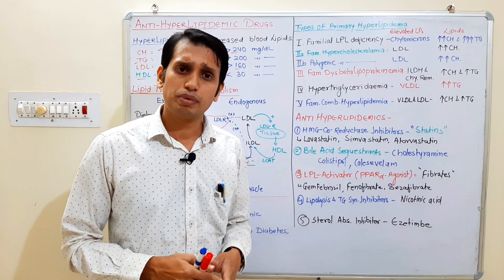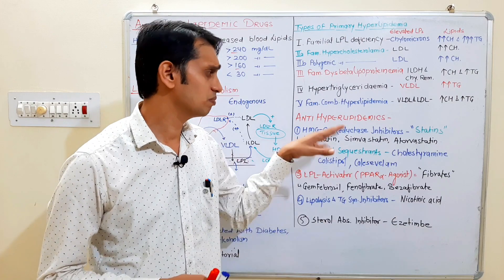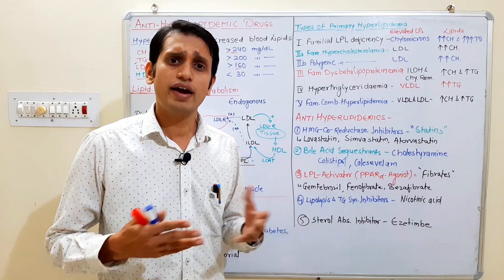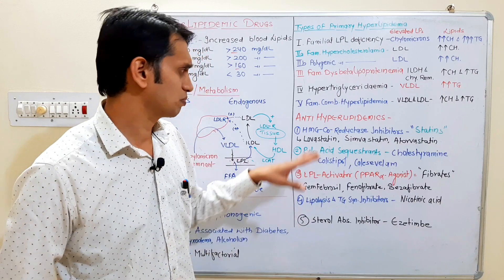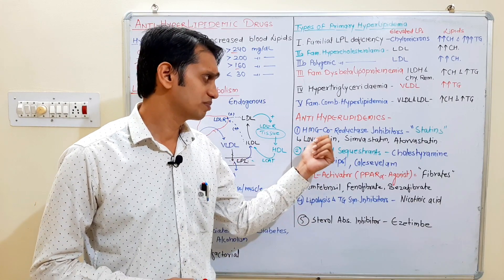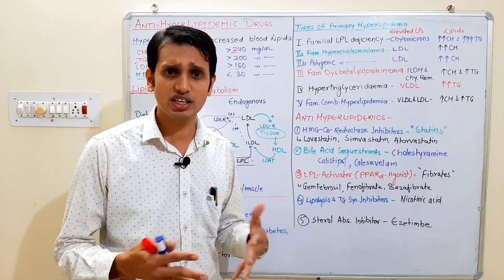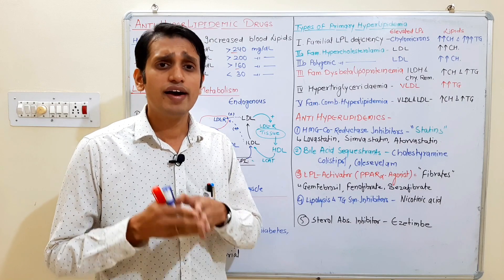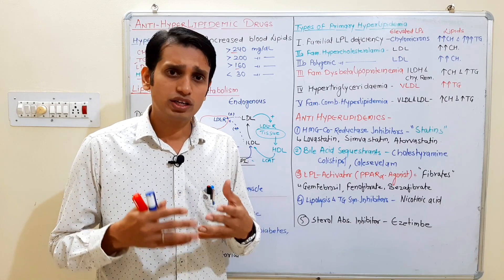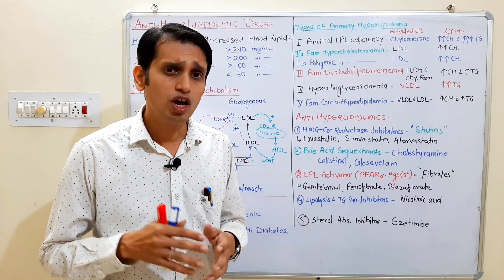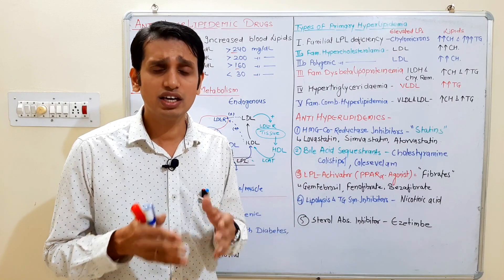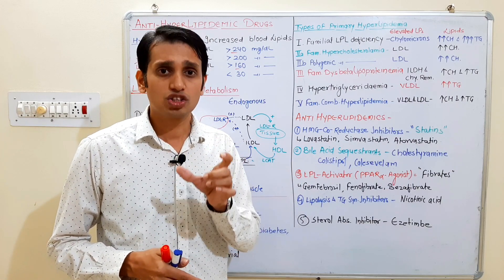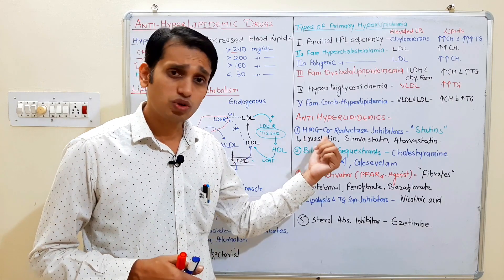Now we can discuss anti-hyperlipidemic drugs — the drugs which decrease the level of lipids in your blood. There are five main categories. First are the HMG-CoA reductase inhibitors, like statins — for example, Atorvastatin, Lovastatin, and Simvastatin. These drugs inhibit the HMG-CoA reductase enzyme inside the liver, which is the rate-limiting step in cholesterol synthesis. If this enzyme is blocked, cholesterol synthesis is reduced and blood cholesterol levels can decrease.